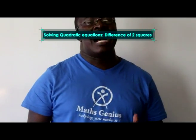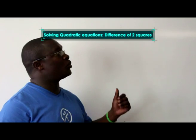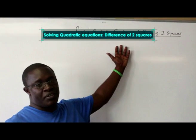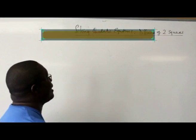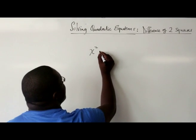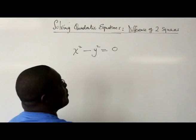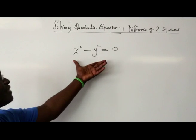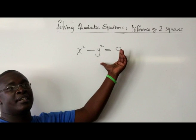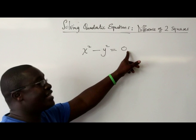So today we're going to be looking at how we can use the difference of two squares principle to solve quadratic equations. Assume that you have an equation that says x² - y² = 0. In this case, you have a situation where you have a difference of two squares and it's an equation that is equal to zero.